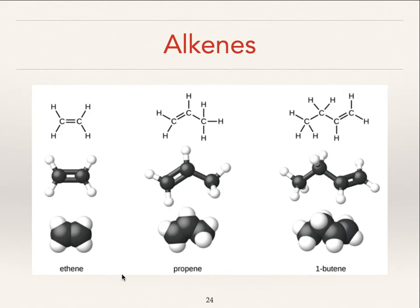There is no methene, and the reason there's no methene is that to make a double bond you have to have at least two carbons, and methane only has a single carbon. So the smallest alkene is called ethene. Instead of propane we have propene, and instead of butane we have butene, and that pattern continues.